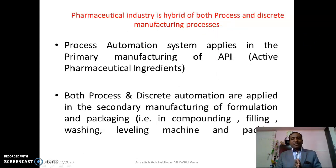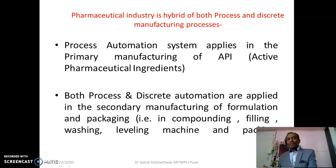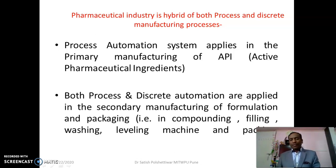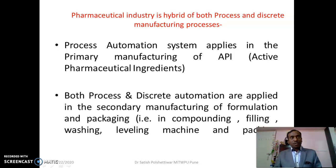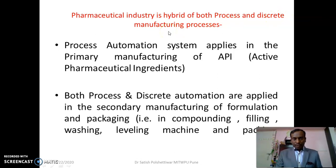Process automation is applied in the primary manufacture of APIs (Active Pharmaceutical Ingredients). Both process and discrete automation are applied in secondary manufacturing of formulations and packaging — including compounding, filling, washing, labeling machines, and packing systems. The pharmaceutical industry uses automation for continuous packaging, continuous manufacturing, and continuous filling systems using hybrid automation approaches.